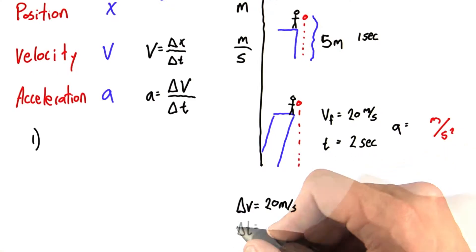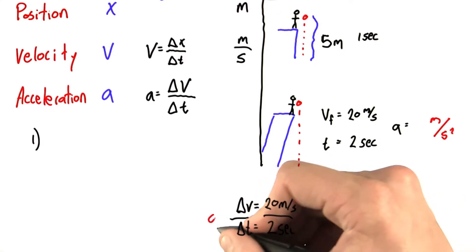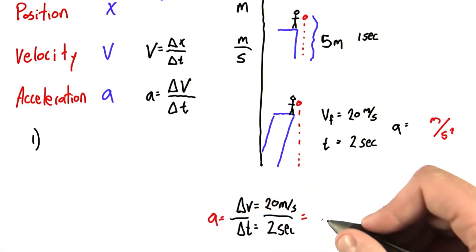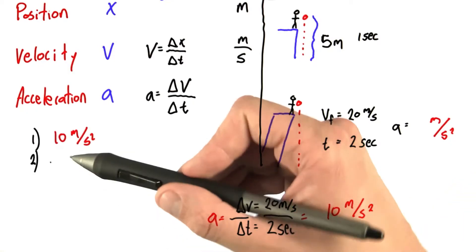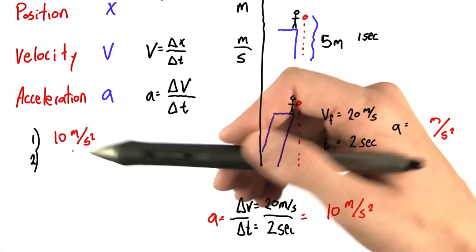And since it takes 2 seconds to drop, delta t is equal to 2 seconds. Well, this is just the equation for acceleration. And so our answer is 20 over 2, or 10 meters per second squared. So that's your first answer you may have given, maybe 10 meters per second squared.